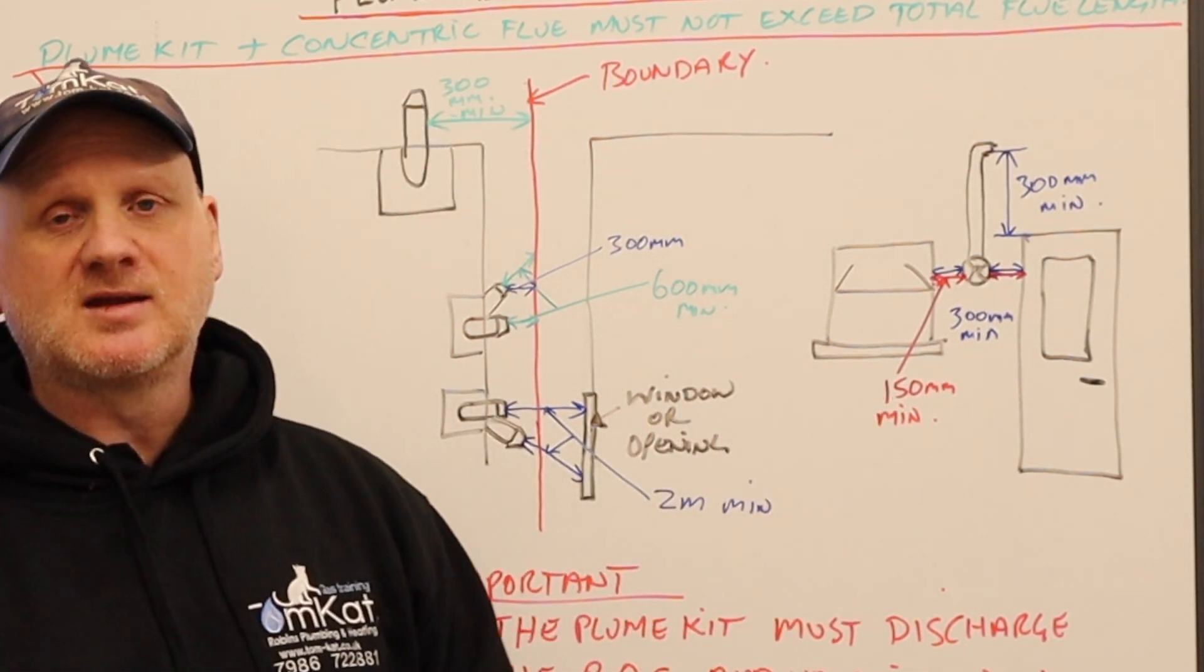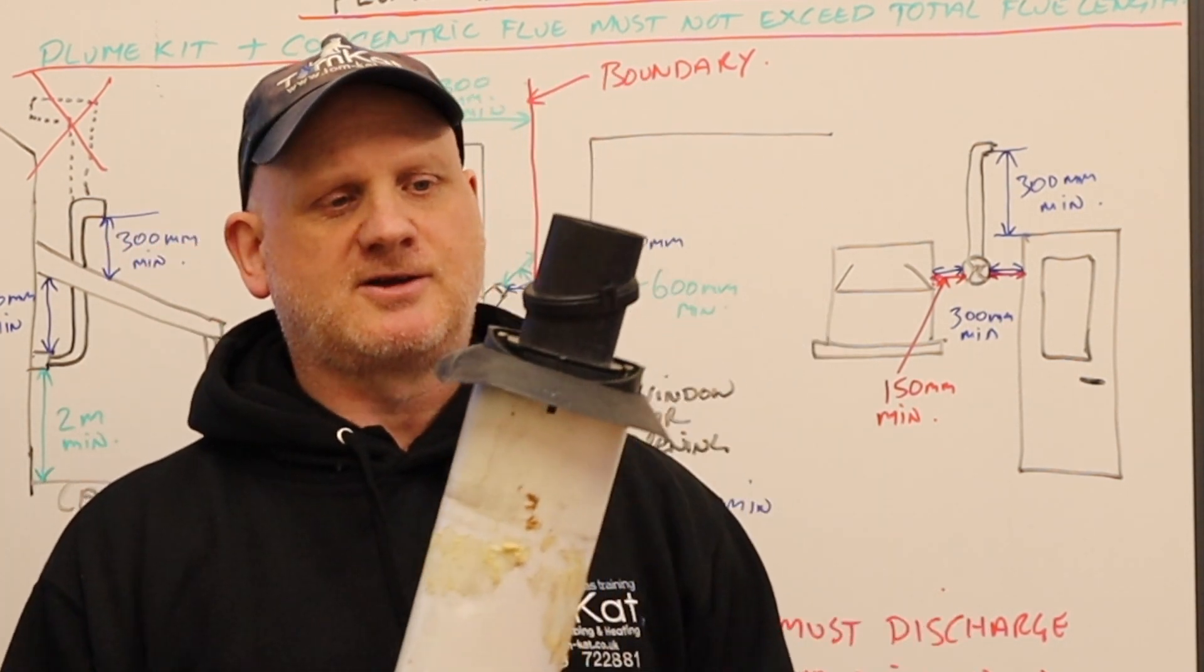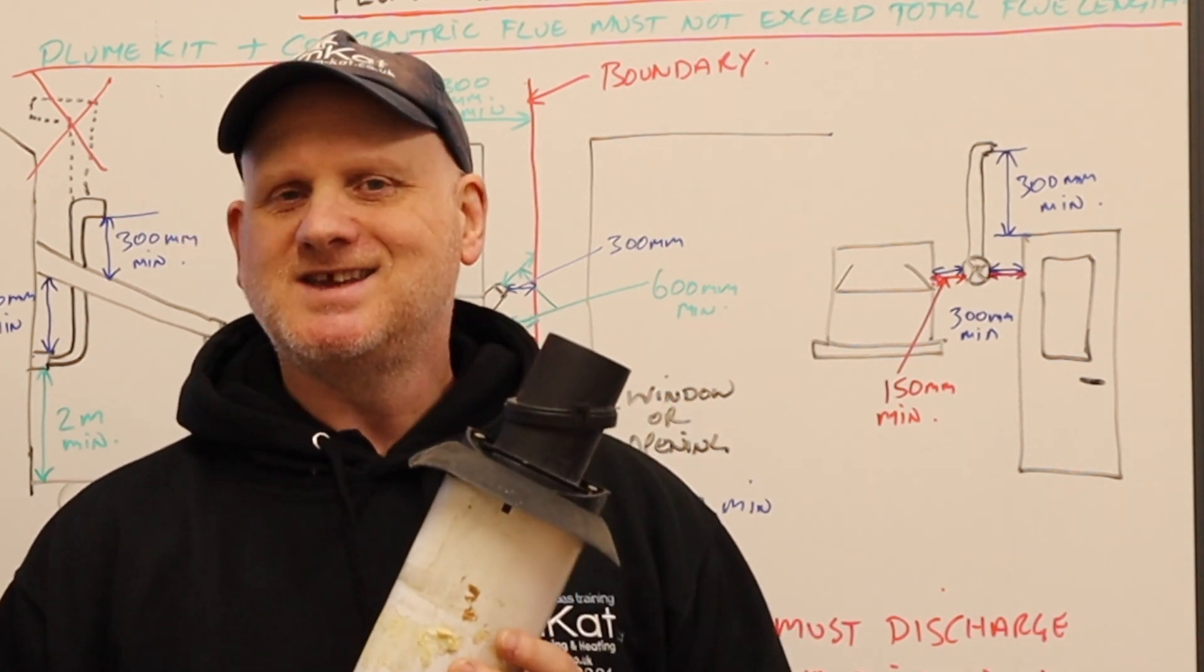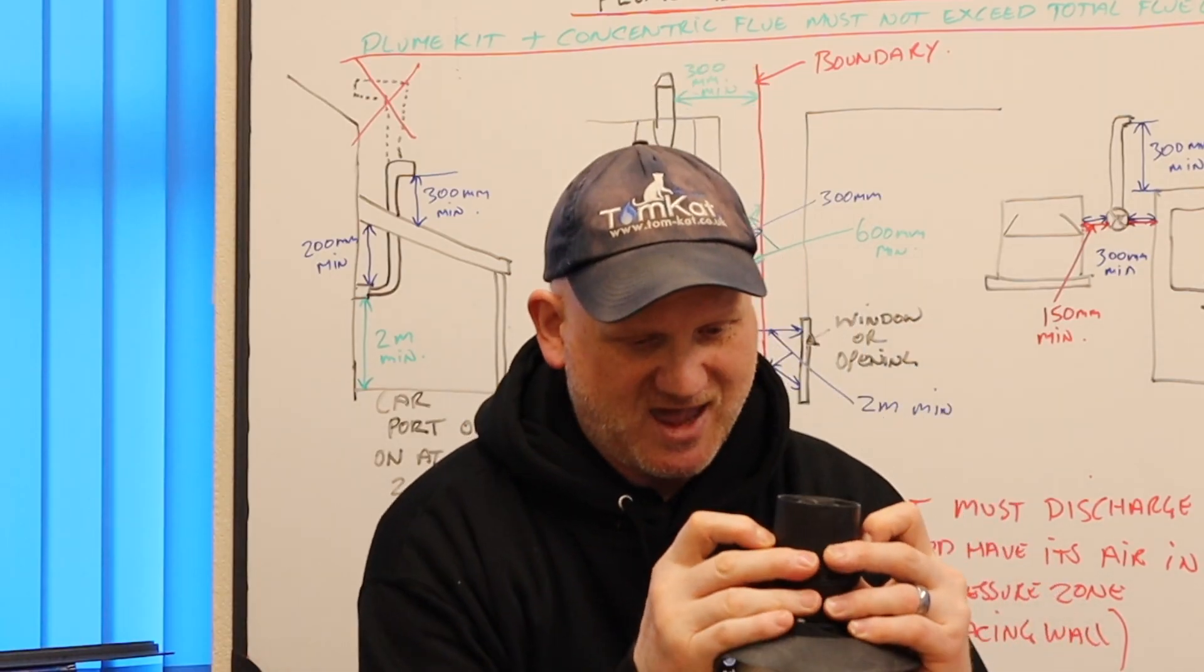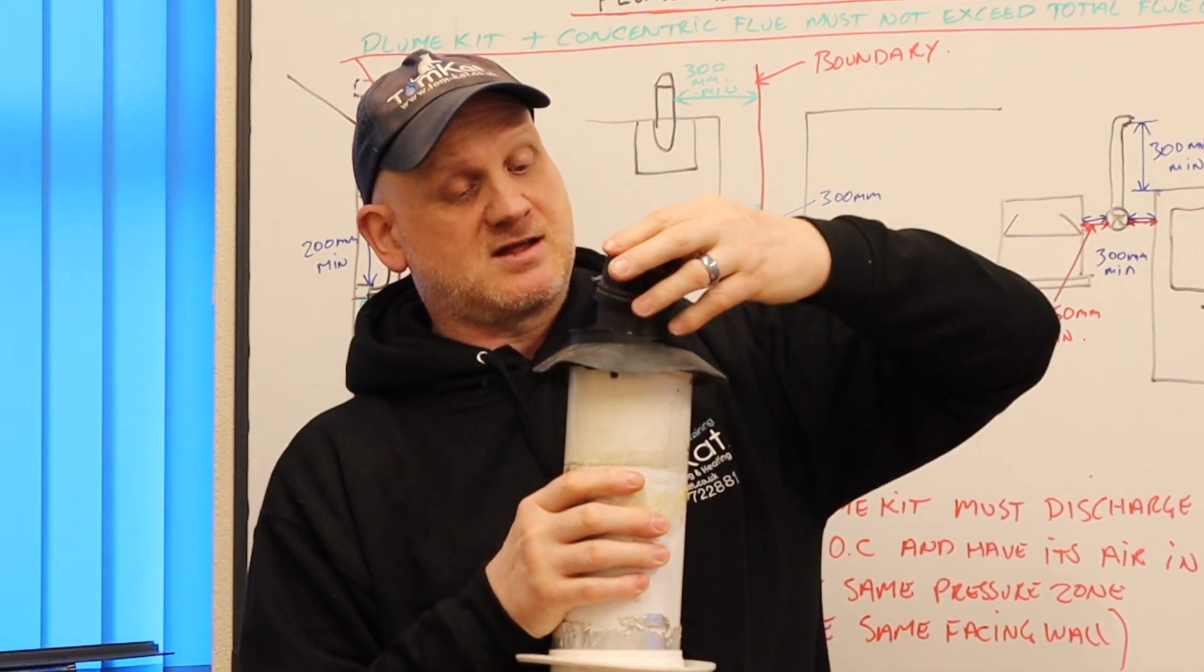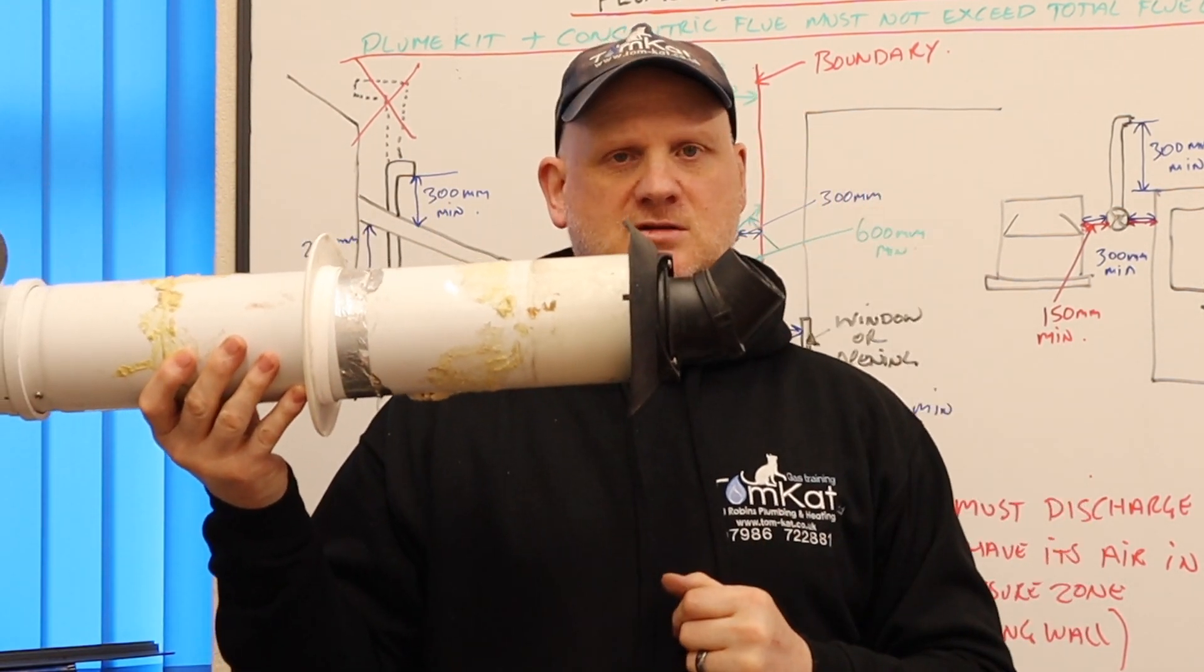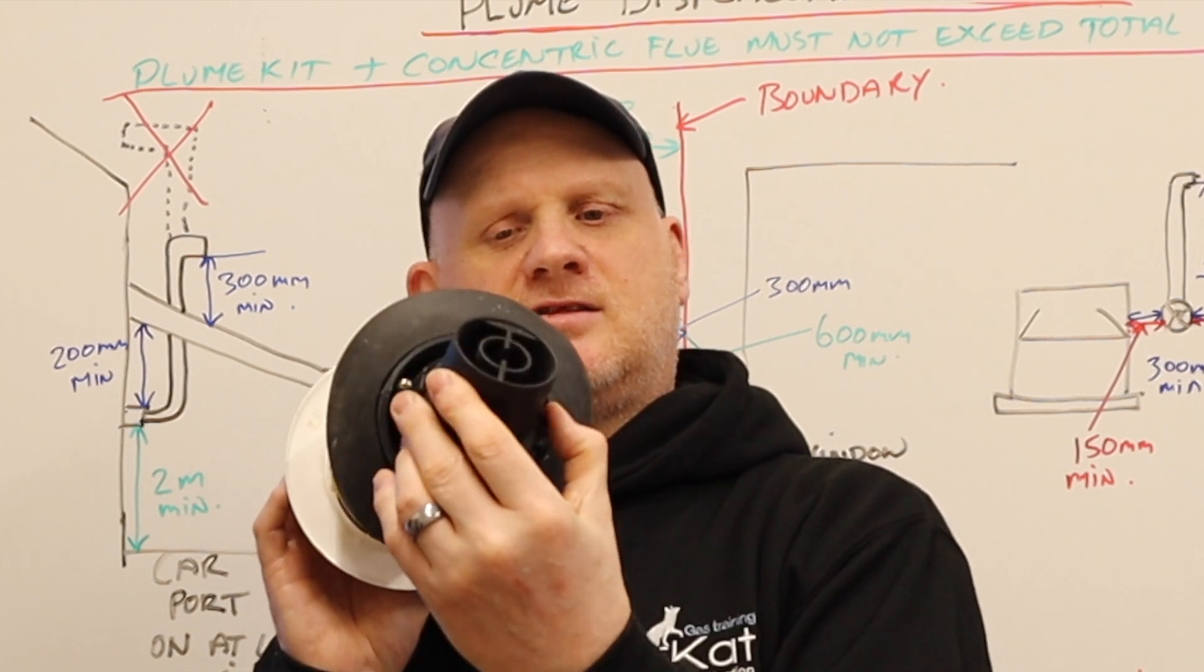Now then, Worcester their flue system naturally already has a plume management kit in it. You don't need to buy a separate plume kit most of the time because if I just undo this bit here, it's a bit fiddly while I'm holding it, and I spin it round so it's now like that and click it back into position, I've now got the flue could go upwards. I can also turn it to this way and this way